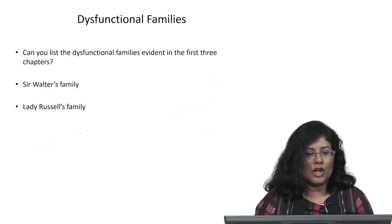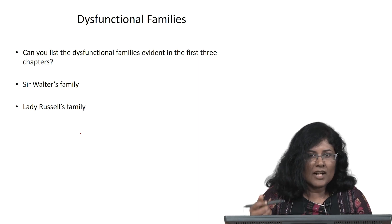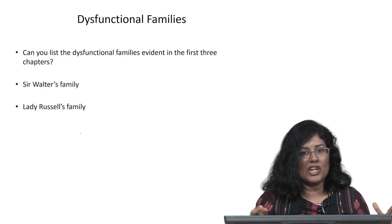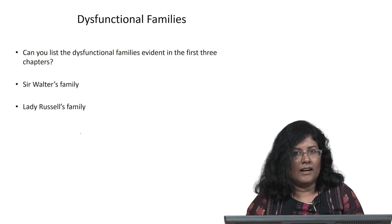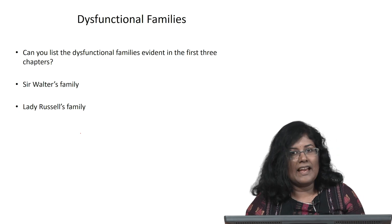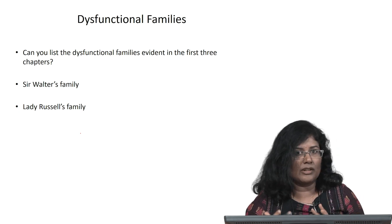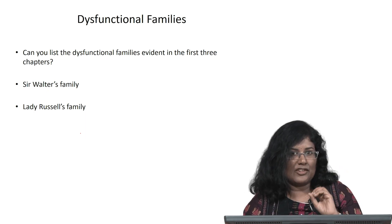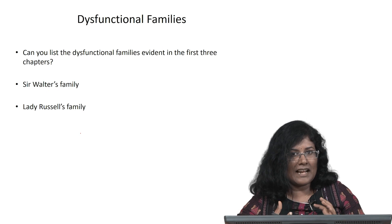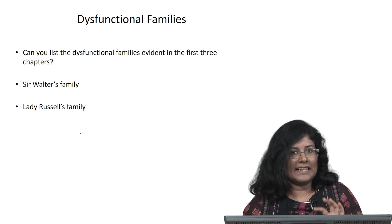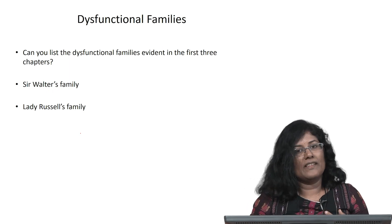Now here is a quick question: in terms of the dysfunctional families referred to in the beginning of the novel, how many can you list? Sir Walter's family is a dysfunctional family. Another dysfunctional family could be Lady Russell's — even though she is a widow, she does not have any children, she does not remarry, and she does not seem to have any close relatives. So that family is also very incomplete. Sir Walter's family is again slightly dysfunctional, and you would see in what way shortly.